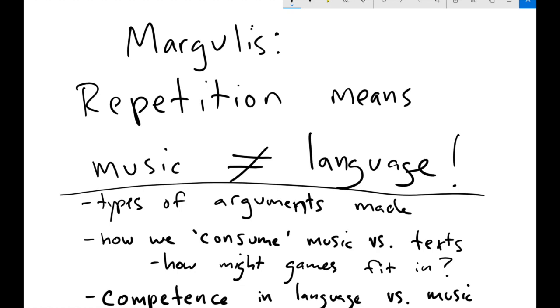All of us from a very young age are fully competent in our native languages. But we don't necessarily rise to the level of a Pulitzer Prize winning poet. For example, we don't become these sort of world renowned experts of language, even though we have deep, thorough competence in language. And so think about the things that Margulis says about musical competence and what the significance of this might be.